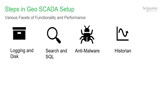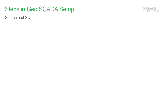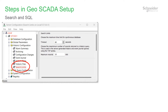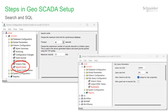Now moving on to some parameters related to database search and SQL. There are two pages of the server configuration tool which relate to SQL searches. These need to be set to sensible values to reduce the impact of poorly constrained searches by users. The limits are in Historic Configuration Search Limits and SQL Query Configuration Parameters. Press F1 to get help on the specifics of each field here.